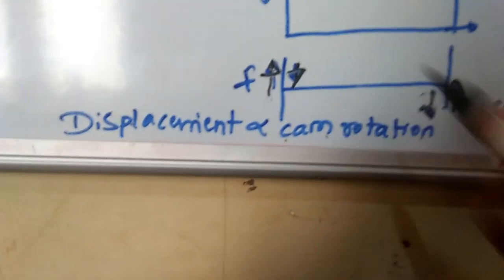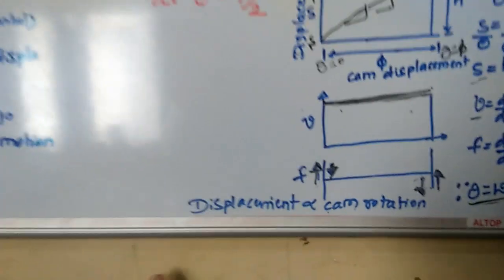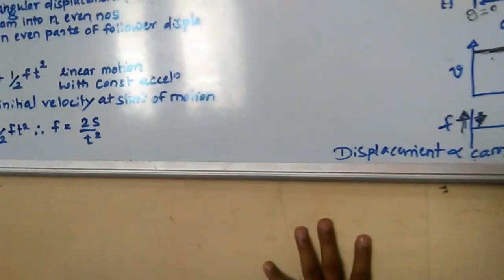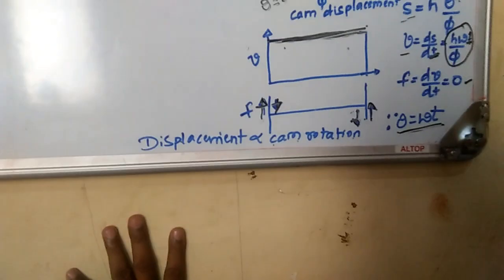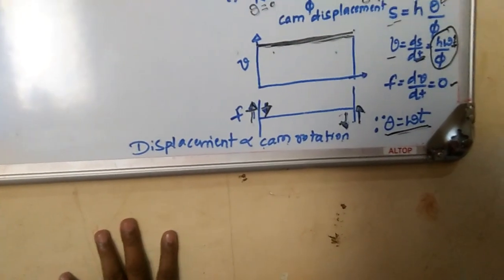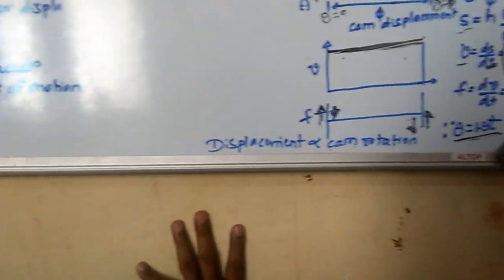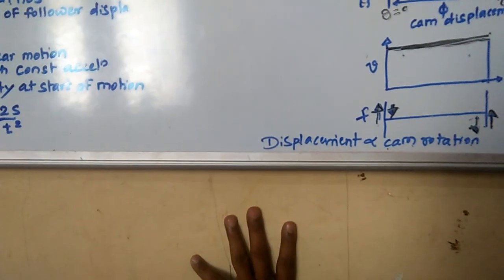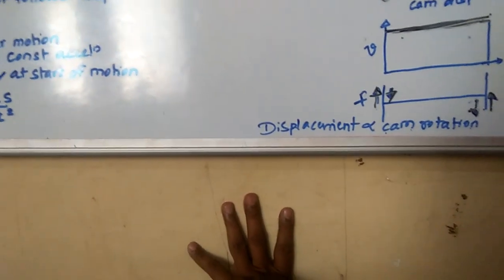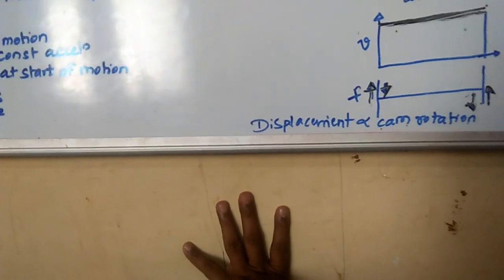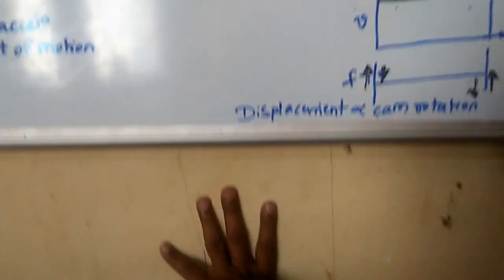I hope you got it. Today I explained two motions: one is constant acceleration and deceleration, and the other is constant velocity. Only one motion is left — the last motion of the follower, which is cycloidal. I will cover that in the next video. Thank you, everybody.